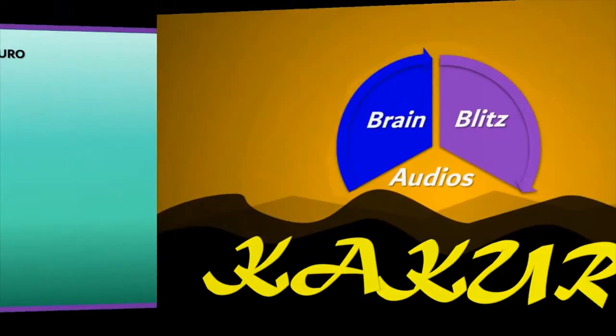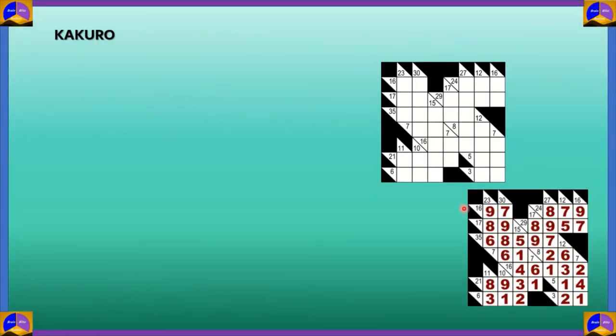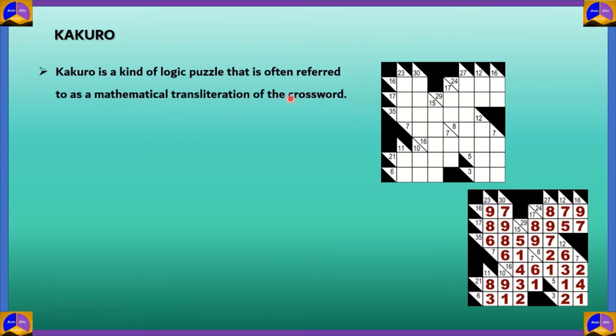Kakuro is a really interesting puzzle consisting of rows and columns, kind of like a crossword. And you're partially right. Kakuro is a kind of logic puzzle that's often referred to as a mathematical transliteration of the crossword.